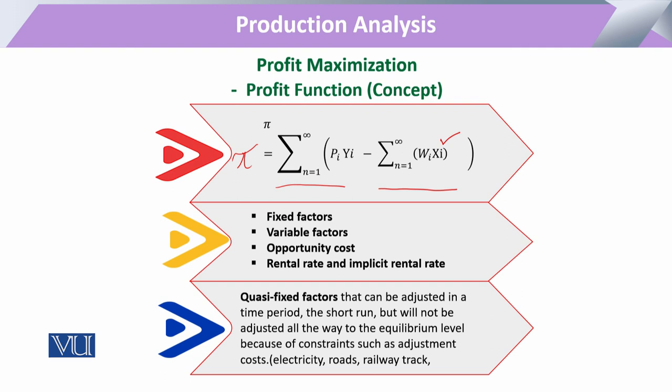Once a variable input like seed has been sown in the field, the entrepreneur or producer will not be able to recover it. This time and expenditure will be sunk — what we call a sunk cost or a fixed form of cost. So while the profit function appears straightforward, the decisions behind it are quite complicated.